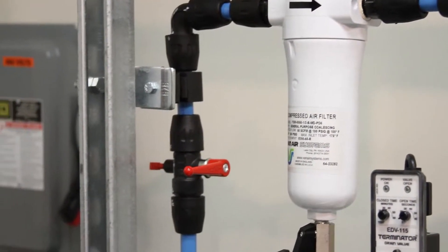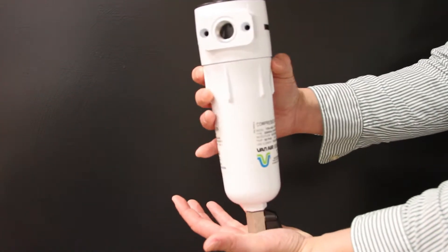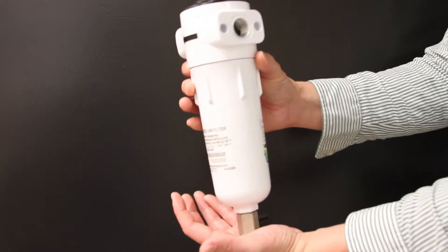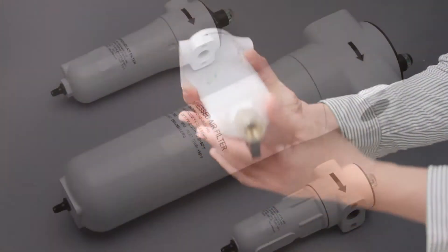If you have a filter on hand and want to change it from coalescing to particulate or vice versa, all you need to do is rotate the head and change the arrows to the opposite direction.